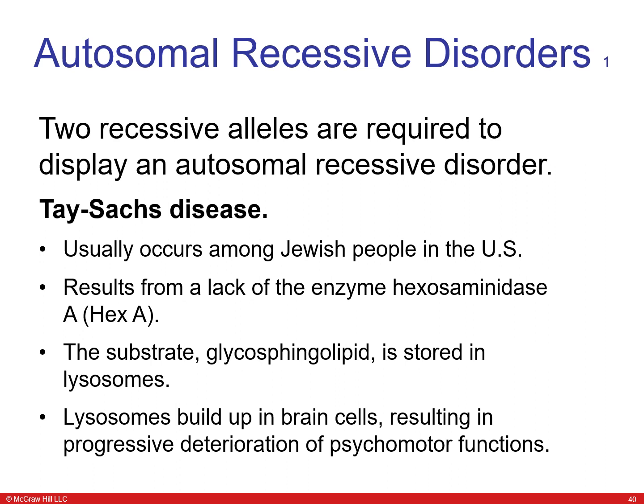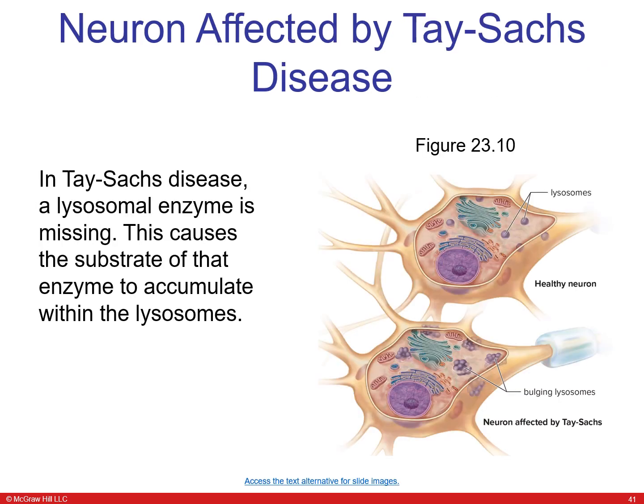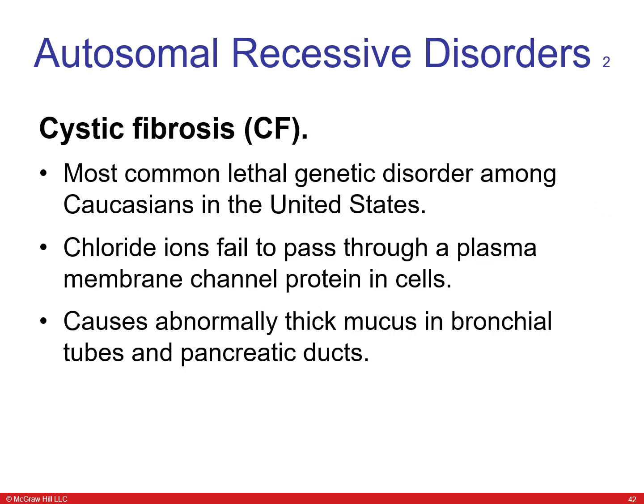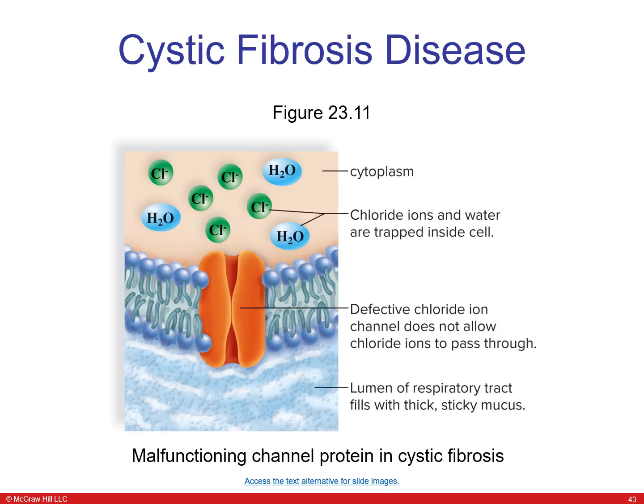An example of an autosomal recessive disorder is Tay-Sachs disease, common among the Jewish population, which results in a lack of an enzyme called hexosaminidase A (Hex-A). The substrate glycosphingolipid is stored in lysosomes, and these build up in brain cells resulting in deterioration of motor functions. Another autosomal recessive disorder is cystic fibrosis, the most common lethal genetic disorder among Caucasians in the United States. A chloride ion channel fails, causing abnormally thick mucus in the bronchial tubes and chronic coughing.